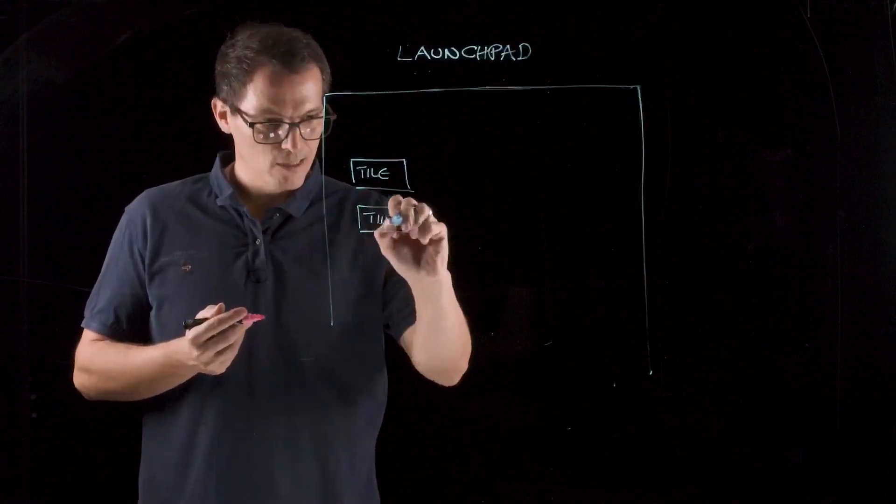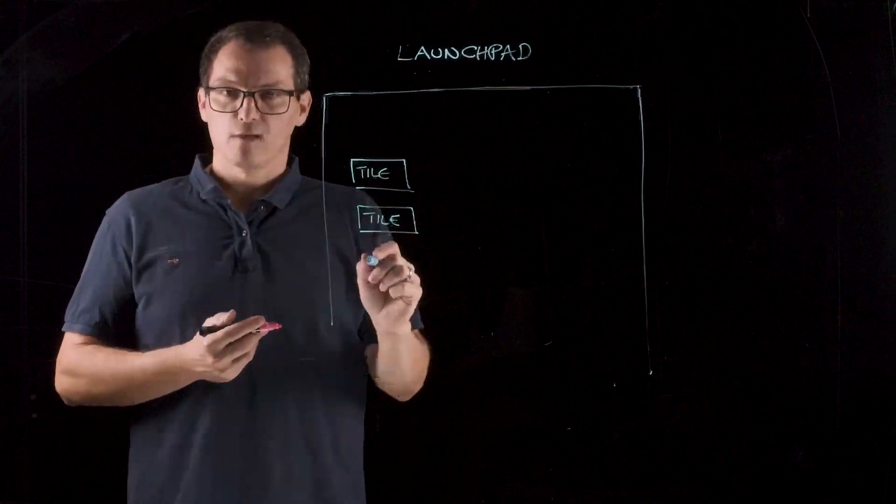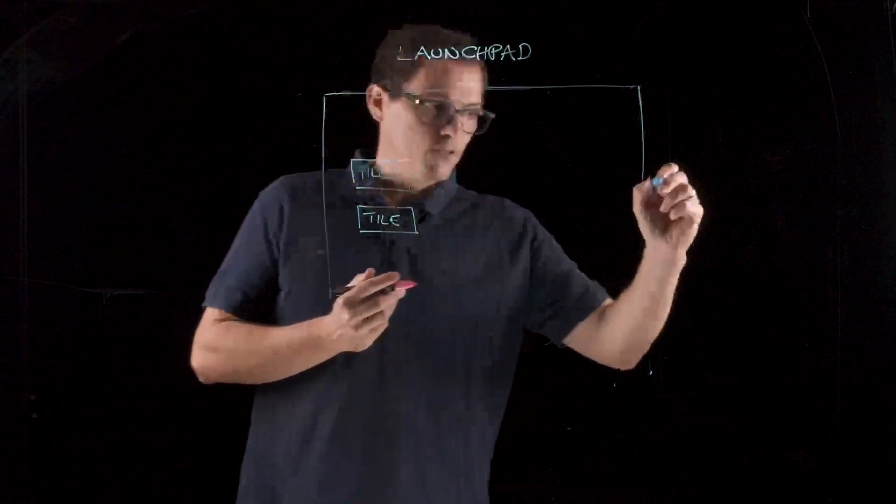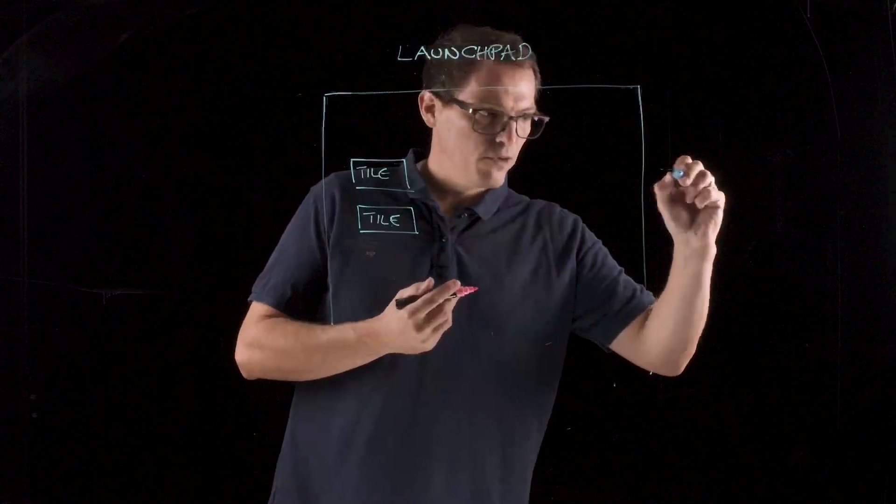So we have tiles here, different tiles. They can be either static or dynamic, where you have a number that changes and KPI that changes. And on the other hand, we have something called a Fiori Catalog.